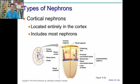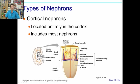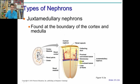A large portion of nephrons are cortical nephrons, which are completely in the cortex, including the loop of Henle. Most of your nephrons are cortical. There are also juxtamedullary nephrons — juxta means to cross — and these are at the border of the cortex and the medulla. The loop of Henle goes down into the medulla for these nephrons.